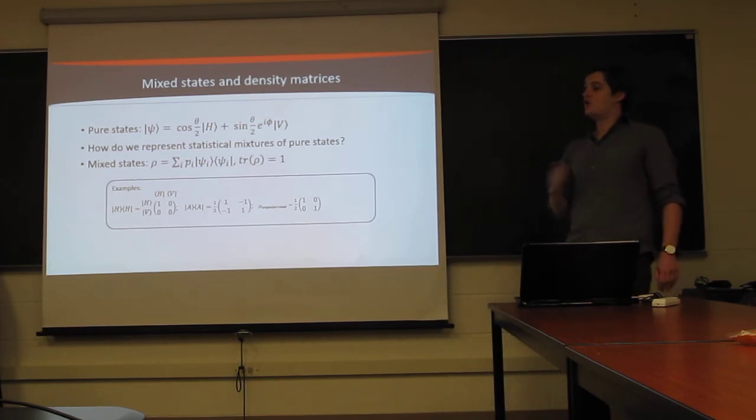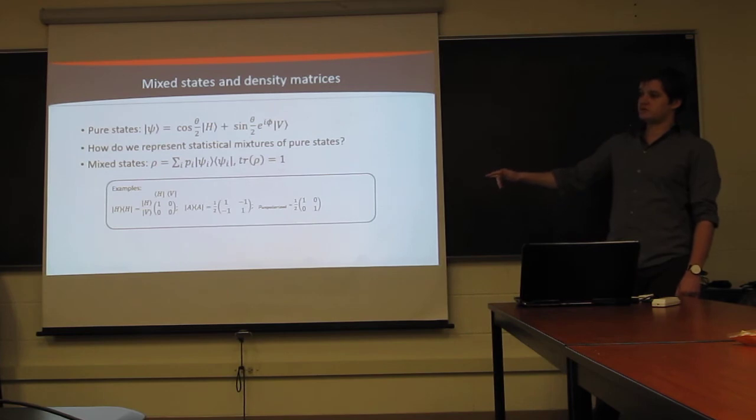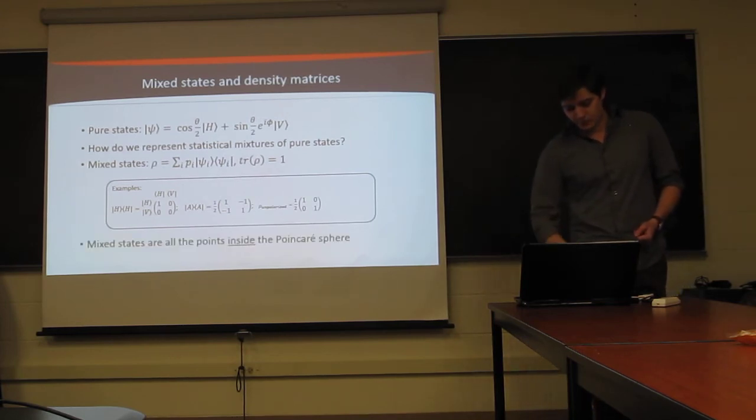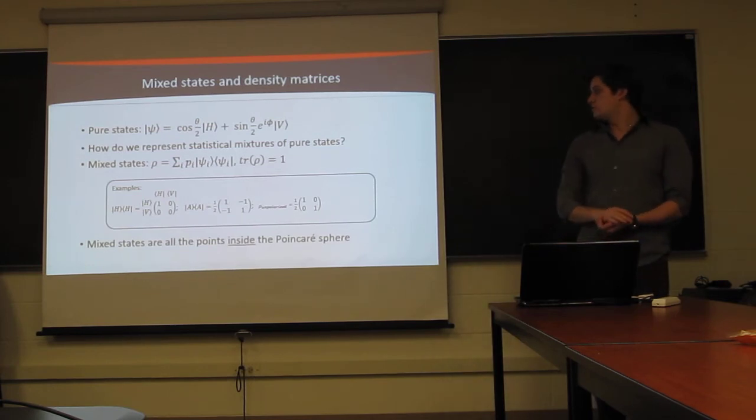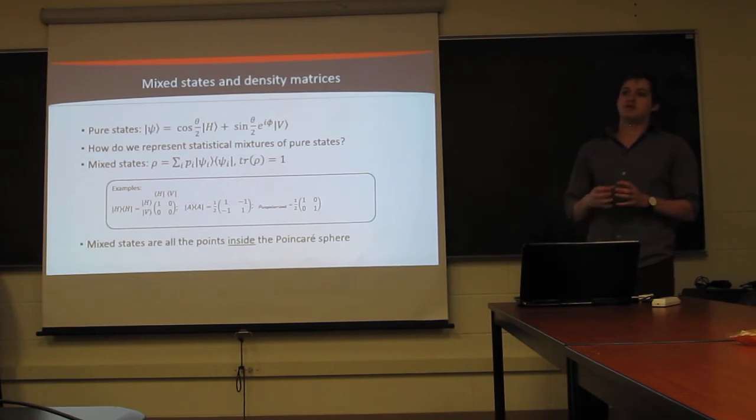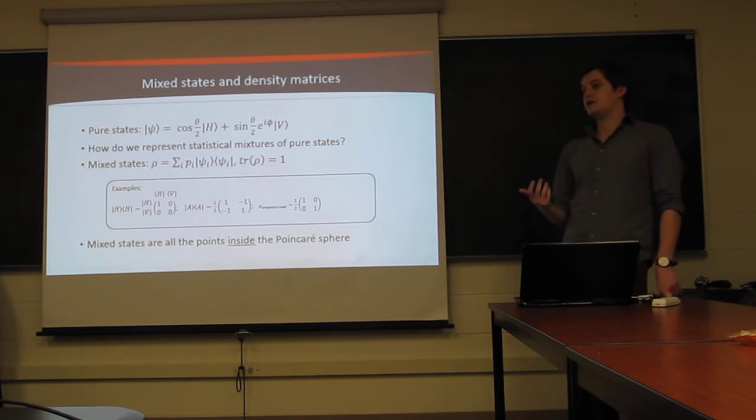The reason we have 0 on the off-diagonal is because we have no coherence between the two terms, or between the horizontal and vertical components of our light. And, therefore, the phase between them randomizes and averages to 0. Now, like we said, the pure states are all the states on the surface of the Poincare sphere. Mixed states will be all of the points inside the Poincare sphere, with unpolarized light being at the very center of the sphere.